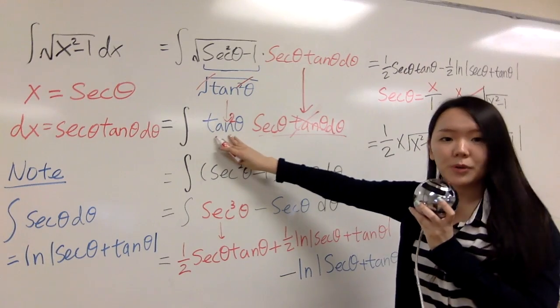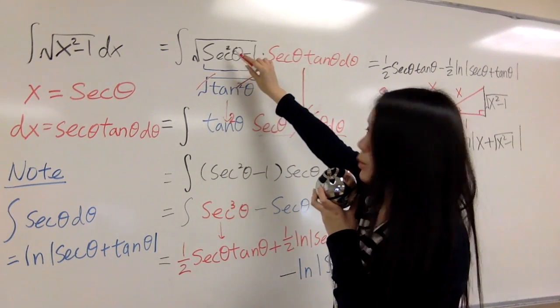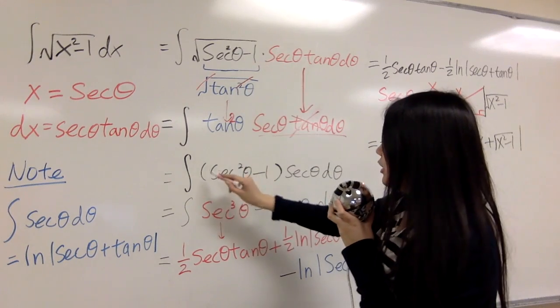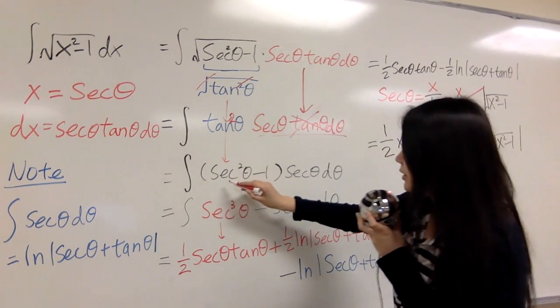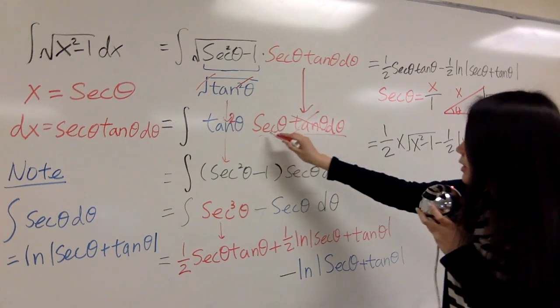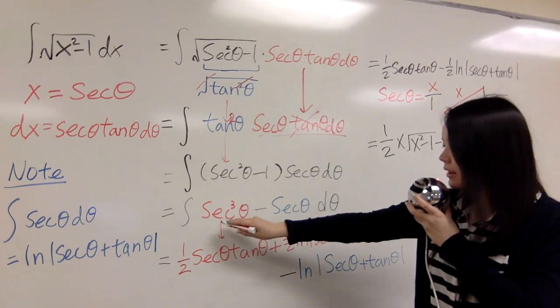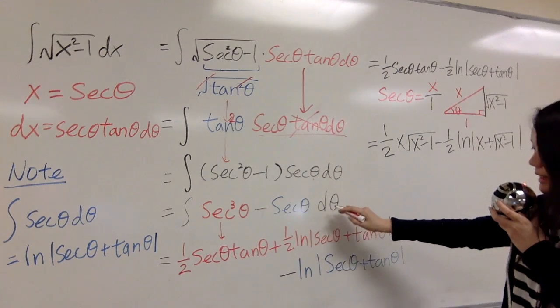So tangent squared theta again is the same as secant squared theta minus 1. So I rewrite it to secant squared theta minus 1 times secant theta here. You distribute to secant cubed minus secant theta dtheta.